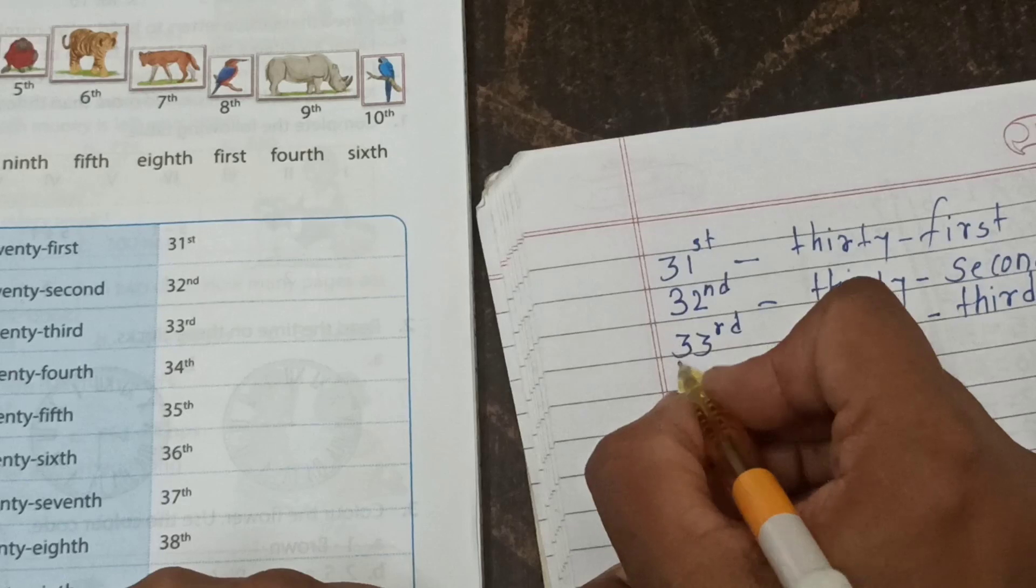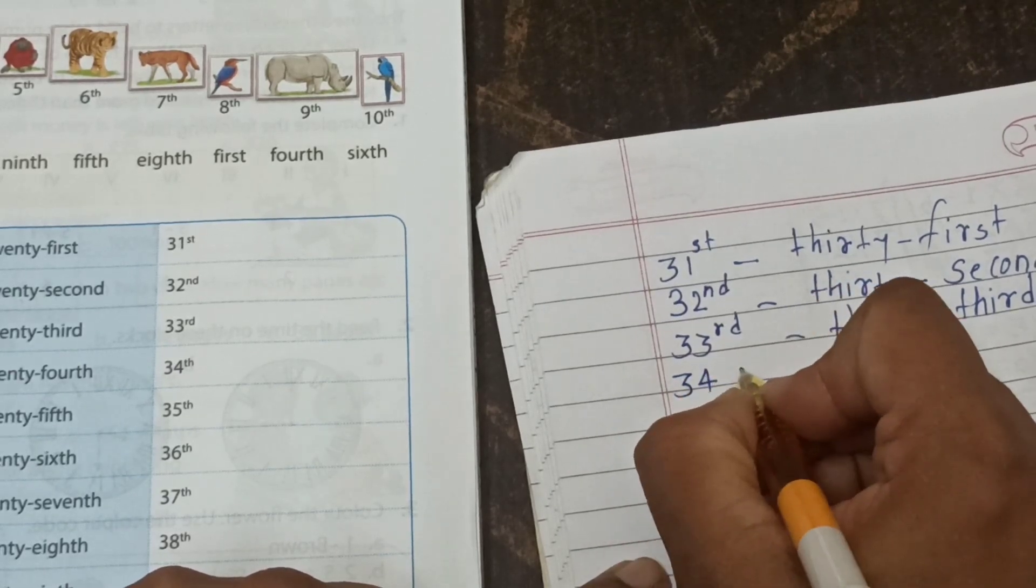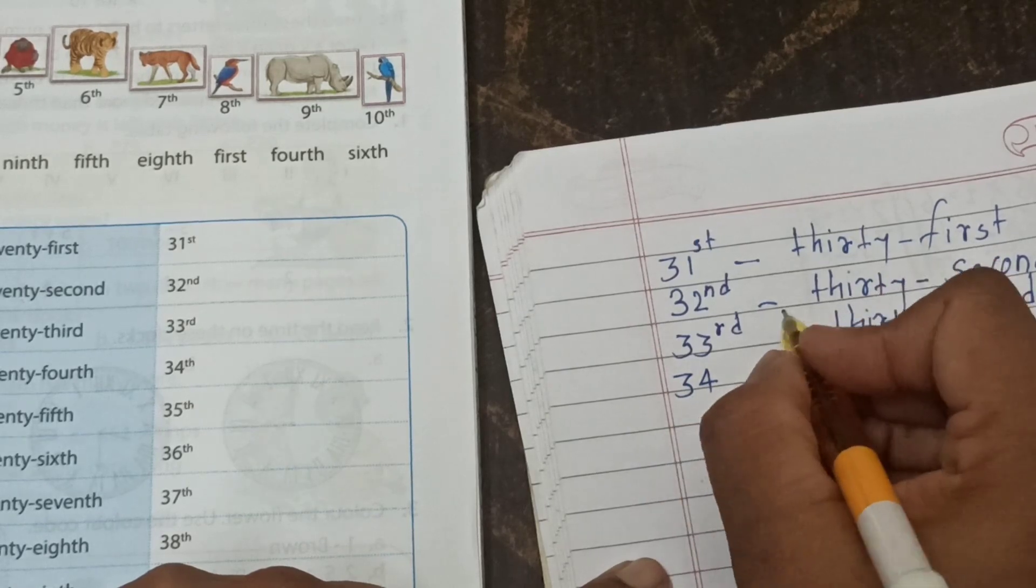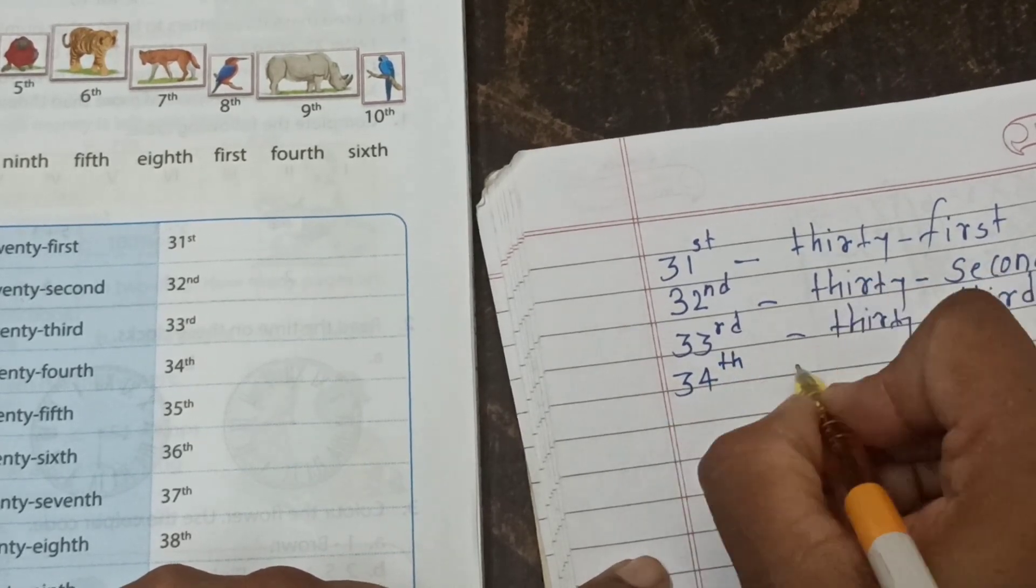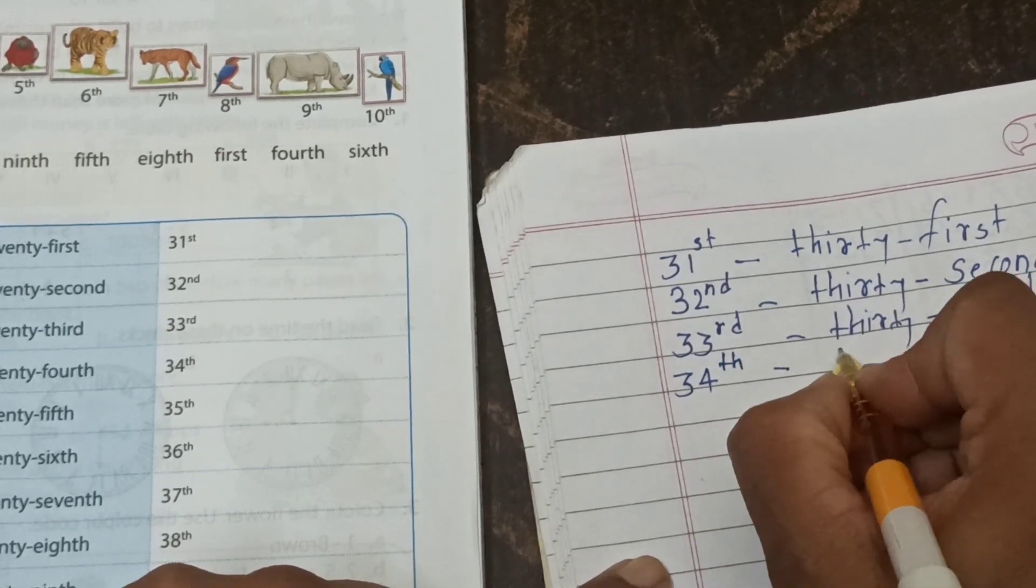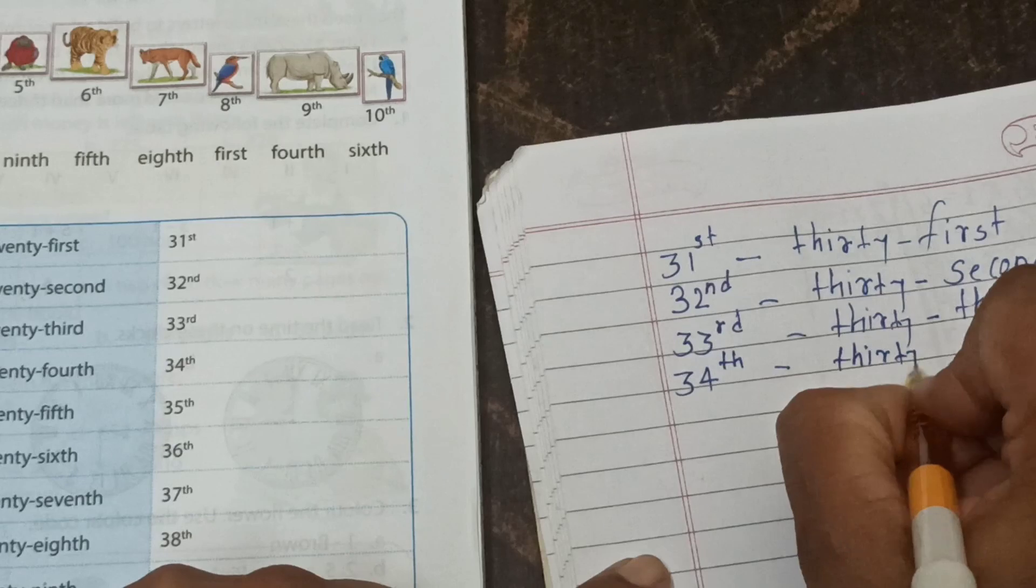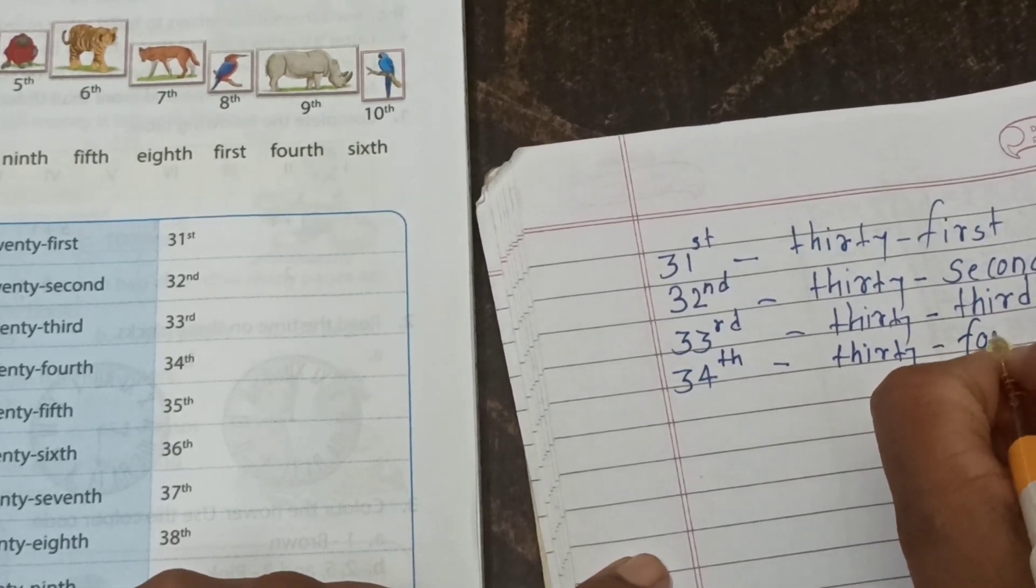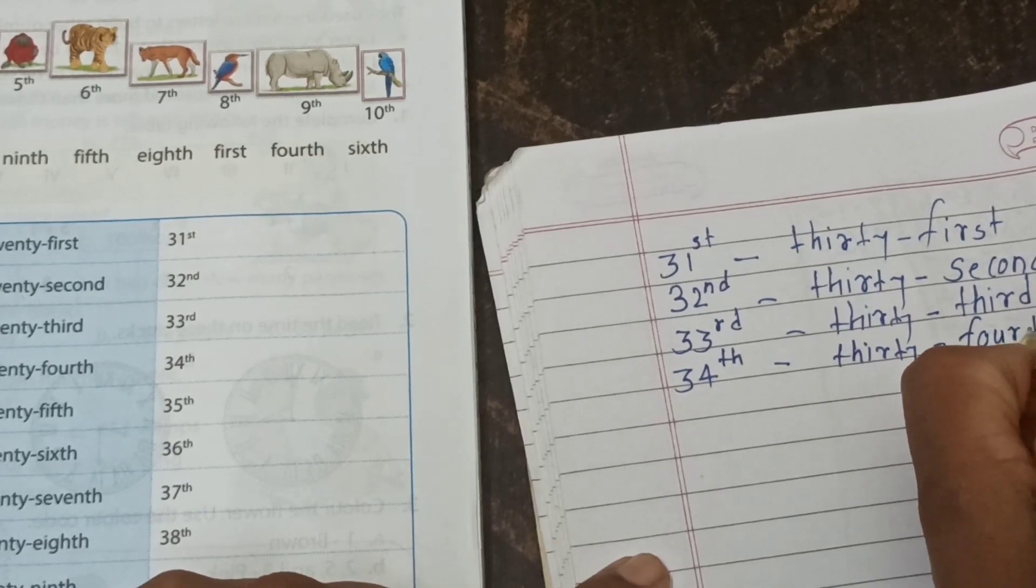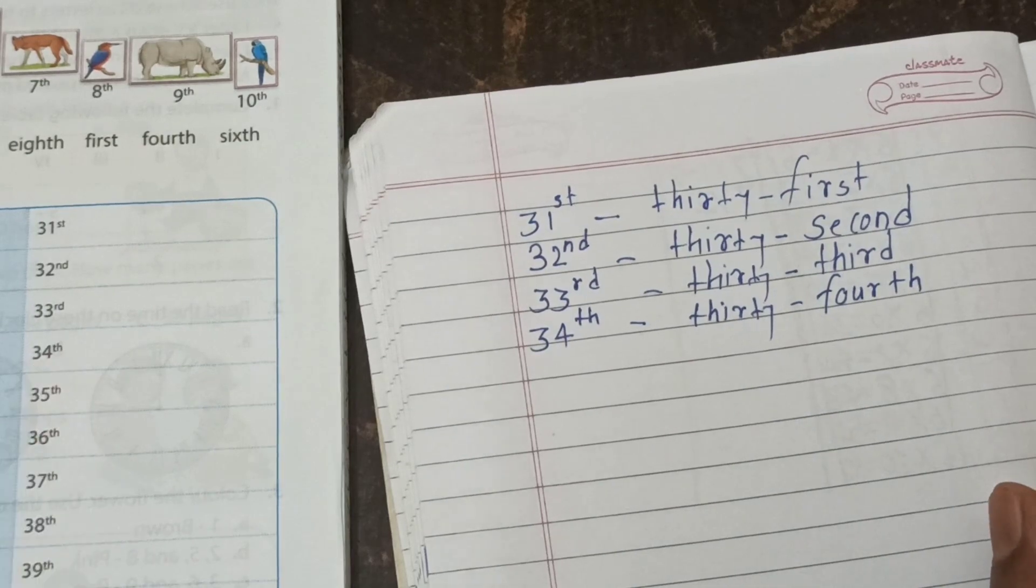The remaining, 34 - how we write down? Here, T-H in small letters, upside. 30: T-H-I-R-T-Y. 34th: F-O-U-R-T-H. Yes, all of you can see, 34th.